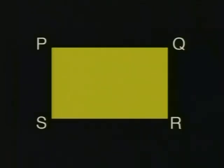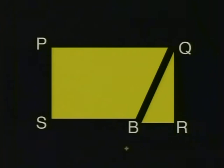Let's have a look at this again using a graphic. So if I make a triangular cut from the point Q to the base SR, and I'll call this point B, we have a triangle that we could move across to side PS.